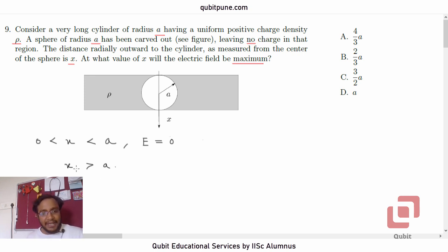Now, to get an expression of electric field E in terms of the variable x, we are going to take the following approach. Firstly, we are going to assume that there is no sphere carved out. So we still have that very long cylinder of radius A having uniform positive charge density.